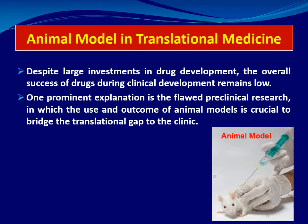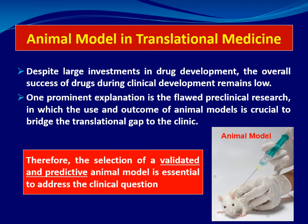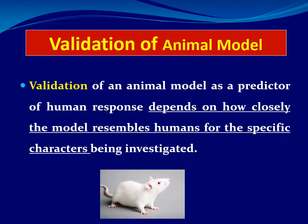One of the prominent explanations for this flood of preclinical research not translating clinically is the failure of animal models to bridge the translational gap to the clinic. Therefore, the selection of validated and predictive animal models is essential to address the clinical question or the clinical target. Validation depends on how closely the model resembles the human condition for the specific characteristics being investigated.